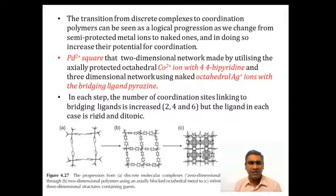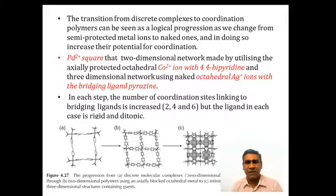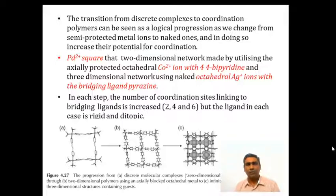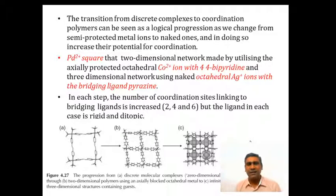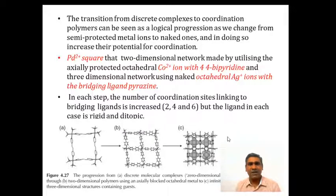Among structures A, B and C, structure A is zero-dimensional and B forms a two-dimensional polymer, and then C is an infinite three-dimensional network structure with some guests included inside. All three use diatopic ligands — 4,4'-bipyridine or pyrazine — which are rigid and diatopic. The metal ions palladium, cobalt and silver differ in their coordination linkages, which is why you get a zero-dimensional square, a two-dimensional and a three-dimensional structure.